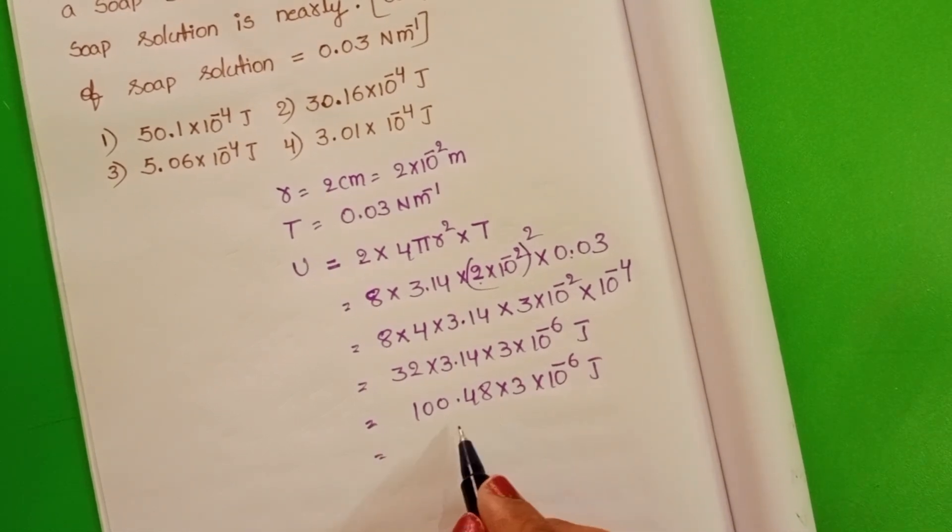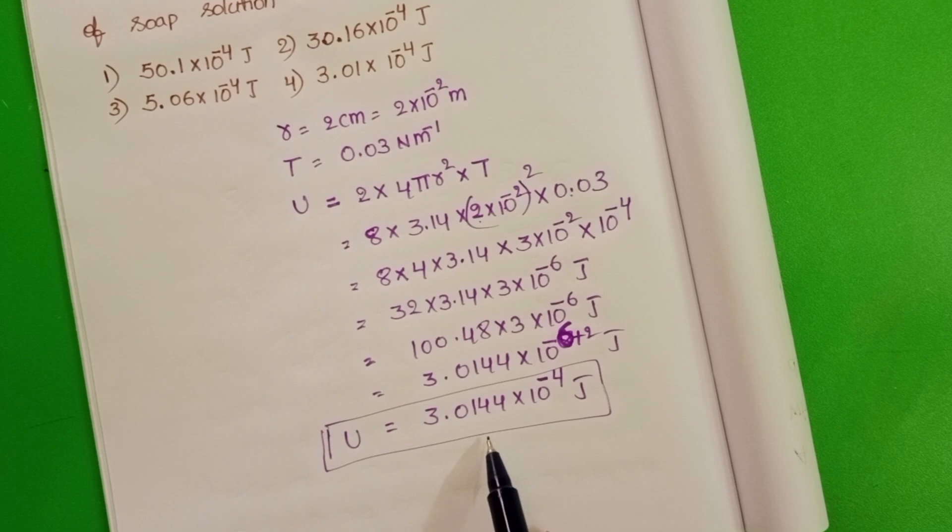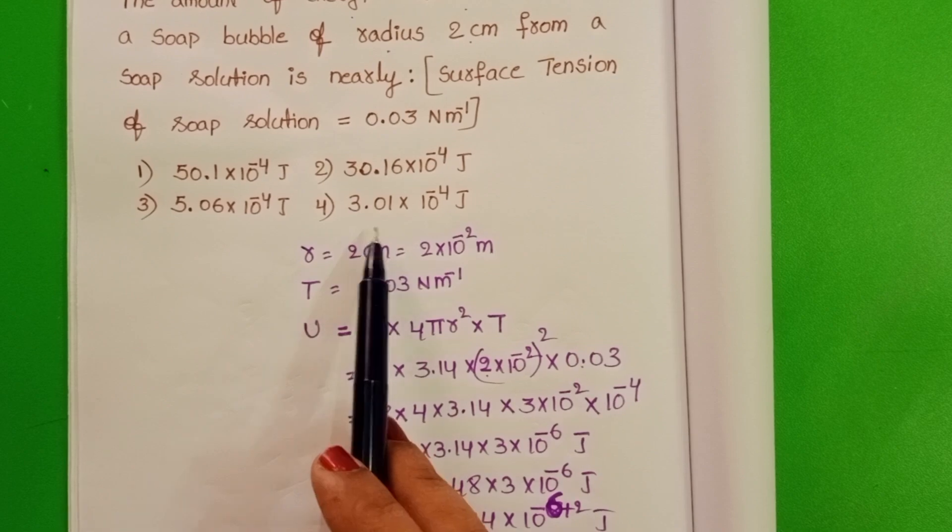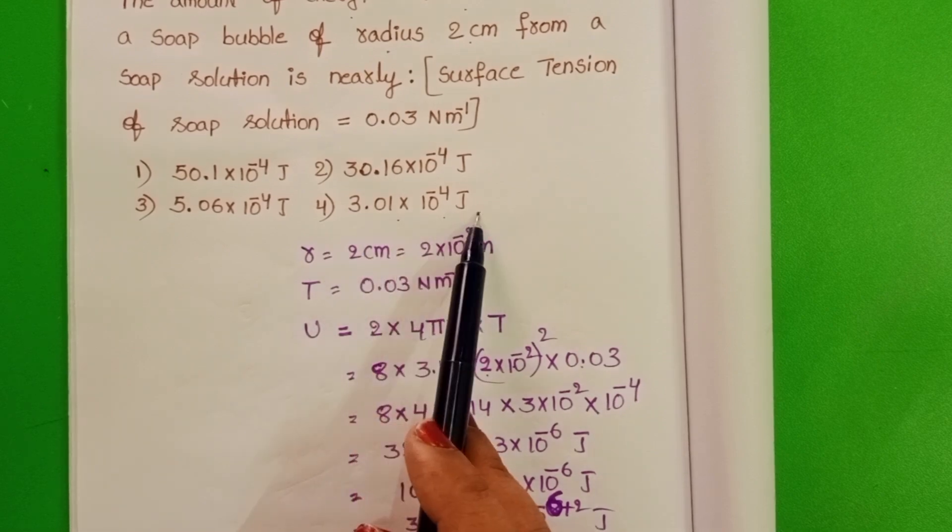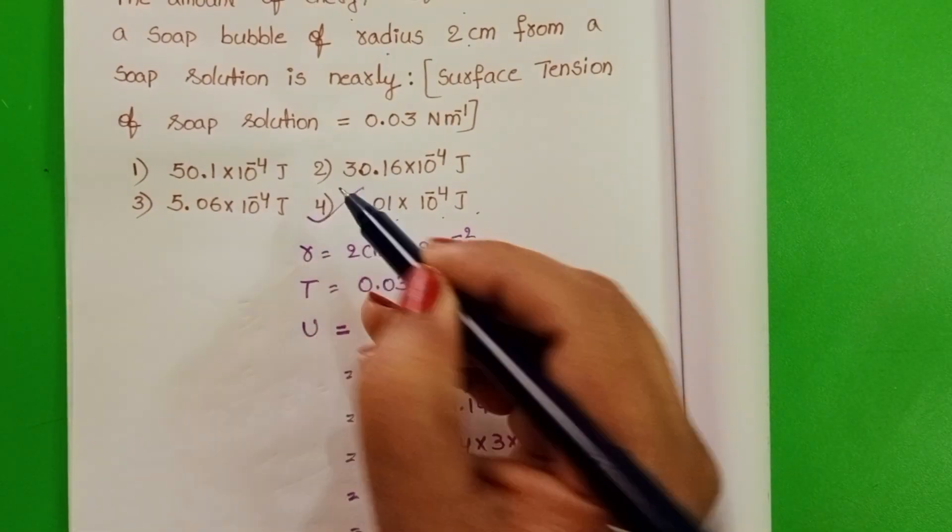Multiply these 2 values. So this is the required energy to form the soap bubble. Check the given options. 3.01 into 10 power minus 4 joules. 4th option is correct.